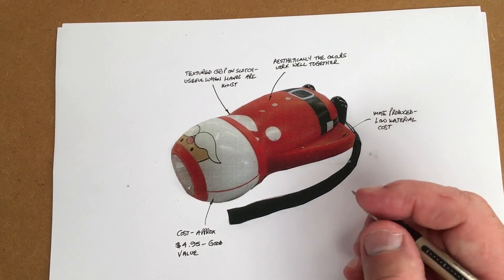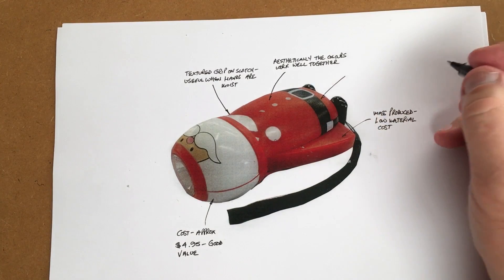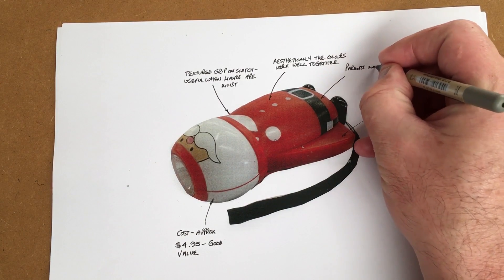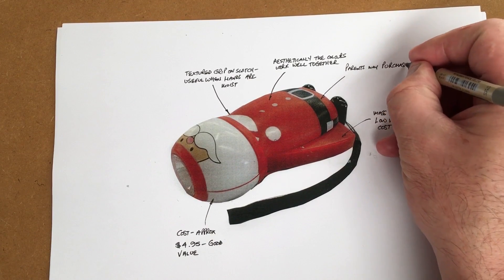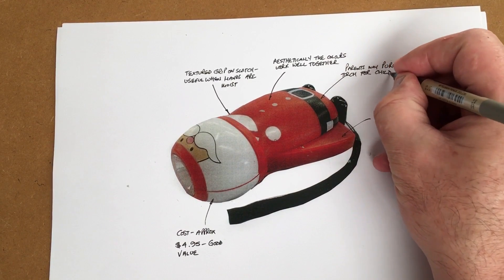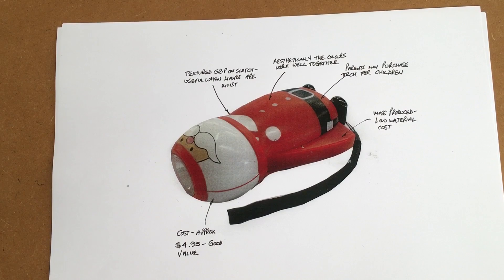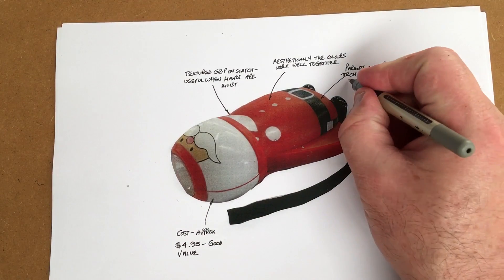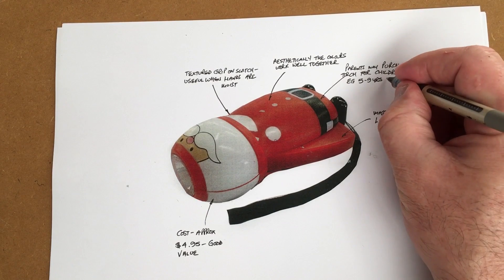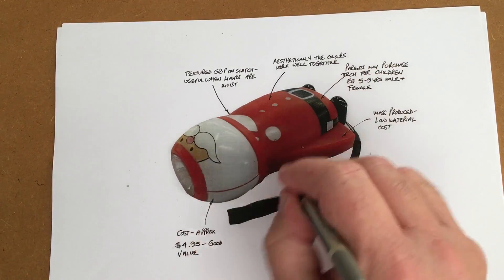What about customer? Who would buy the product? I'm going to say parents may purchase torch for children. I think the parents would purchase it and the users would be the children. The customer would be the parent, the user would be the children. I'd say five to nine years, male and female. I don't think it's gender specific, this particular design.